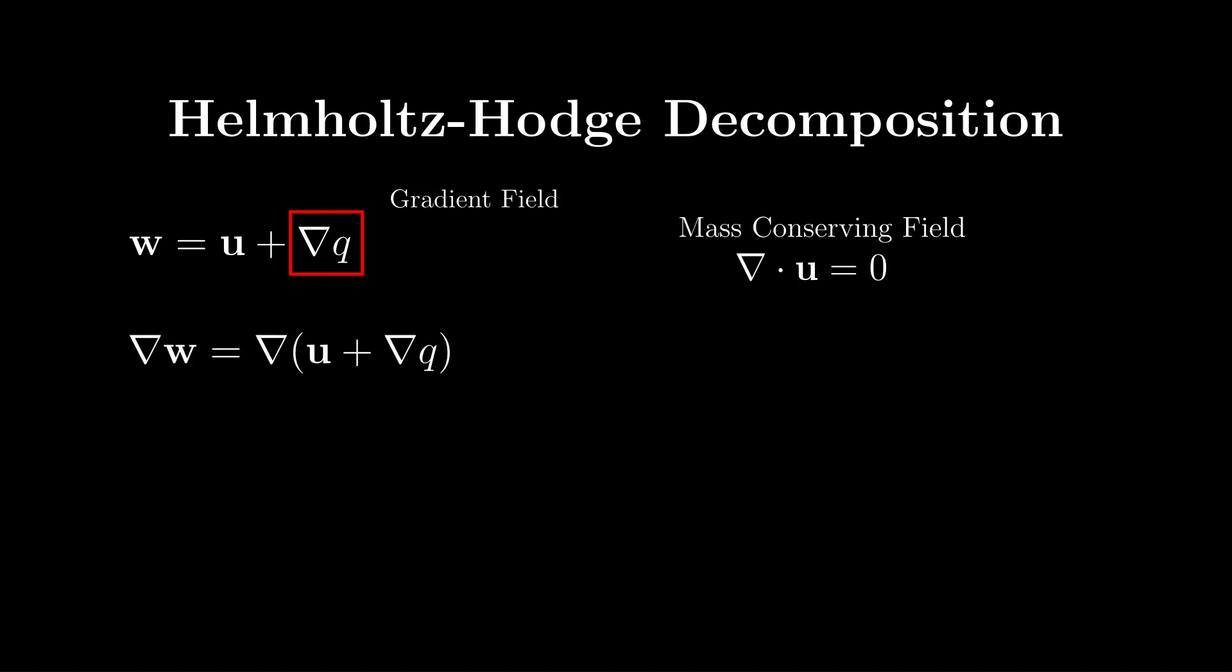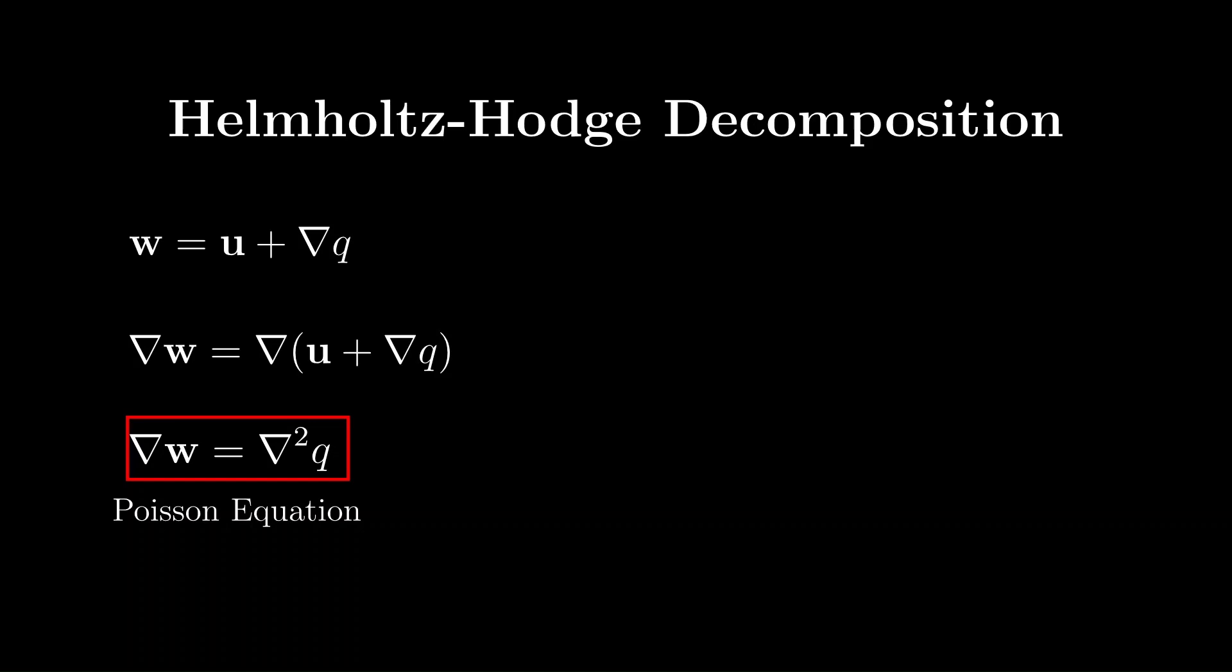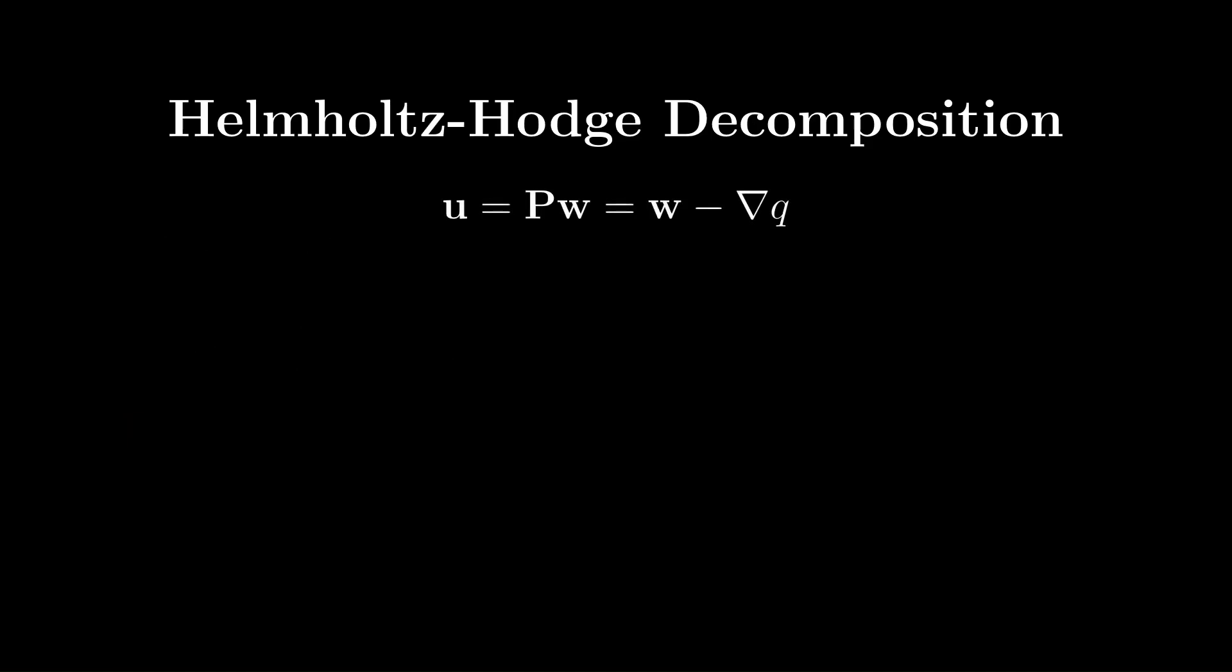To do this, we can take the gradient of both sides of the equation to get the following. Using the fact that u has no divergence, this part cancels, and we get the following Poisson equation for the scalar field q. Now we have a projection operator from which we can solve for the divergence-free part u by simply rearranging our initial equation.